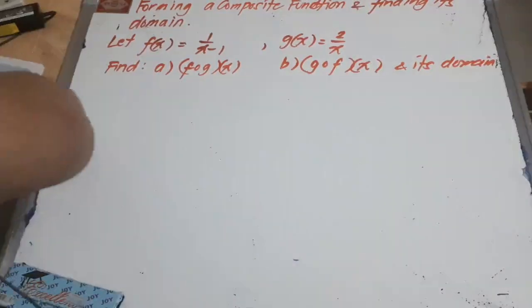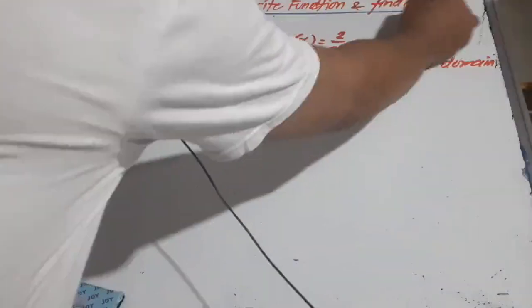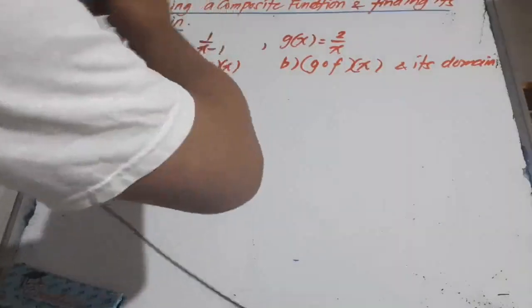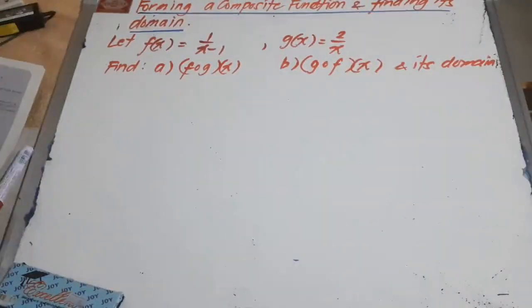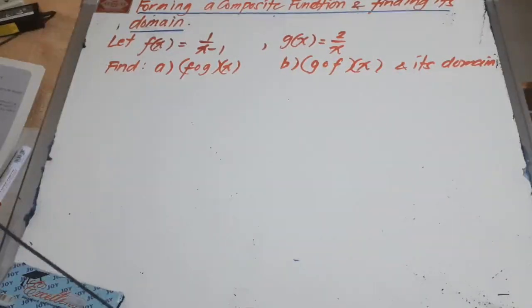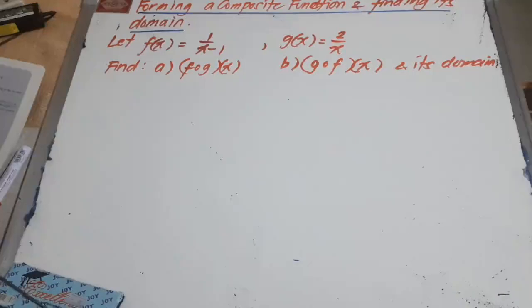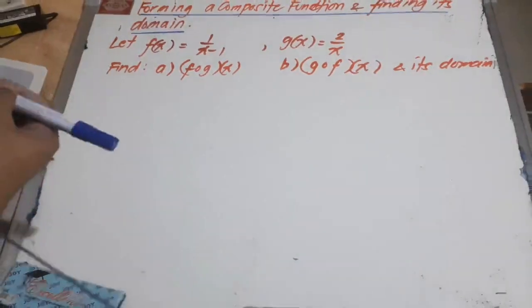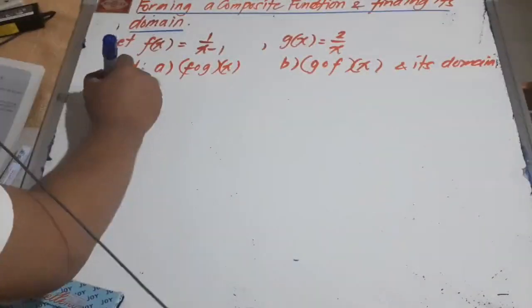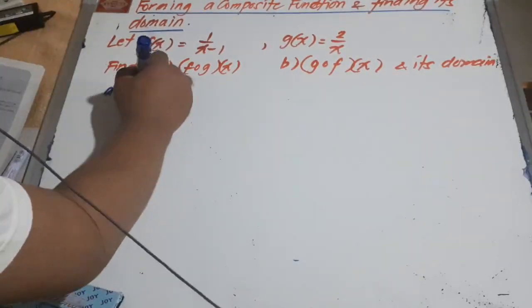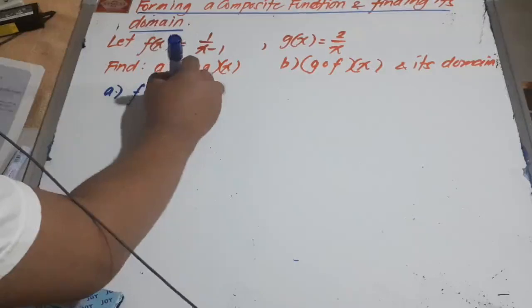This is about forming a composite function and its equivalent domain. If we have f of x equals 1 over x minus 1, and g of x equals 2 over x, find: A) f circle g of x, and B) g circle f of x, and their domains. Let us answer letter A. f circle g of x can be written as f of g of x.